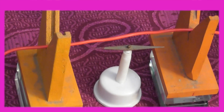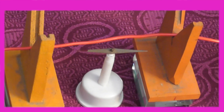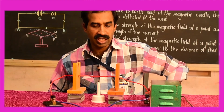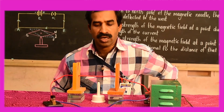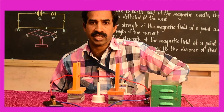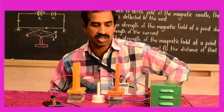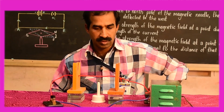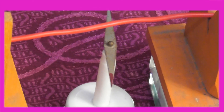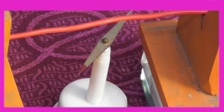When I switch off the current, the needle comes back to its original position and rests in the north-south direction. Now, in case the current is kept constant and the distance between the needle and the conductor is increased, the angle of deflection decreases. You may check with this distance — this is the deflection angle of the magnetic needle.